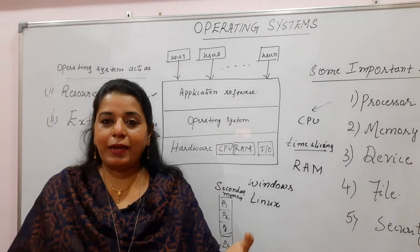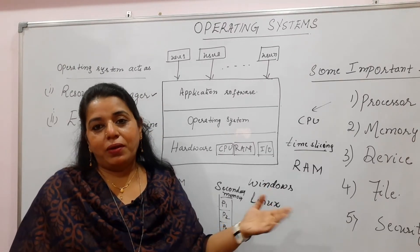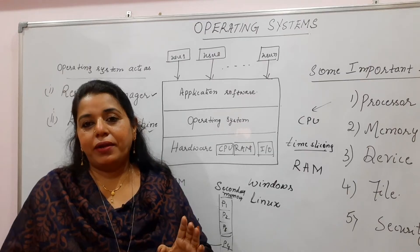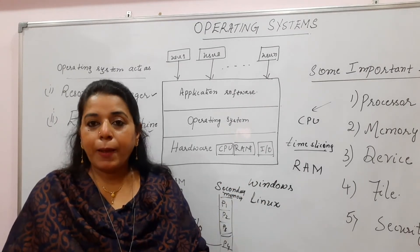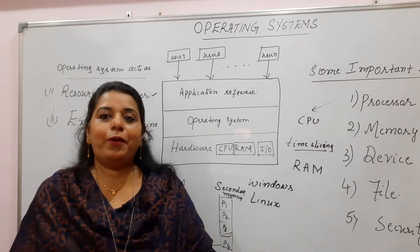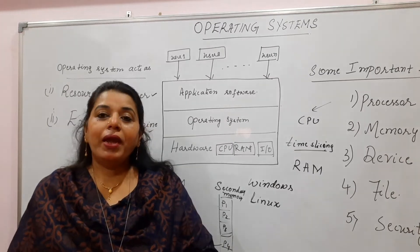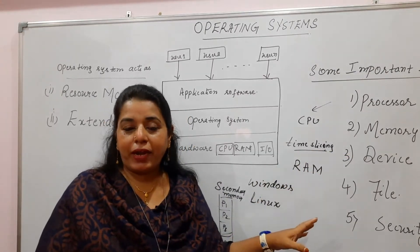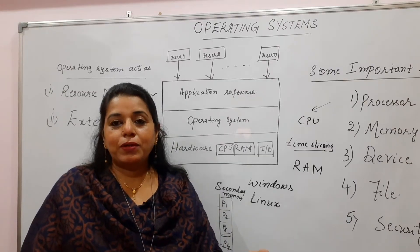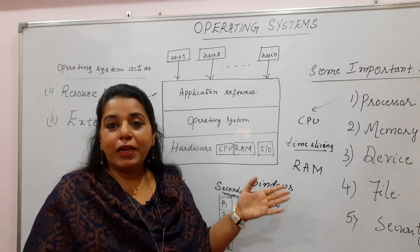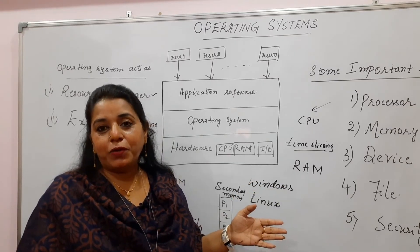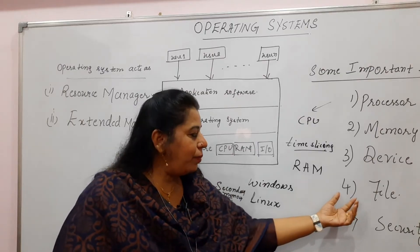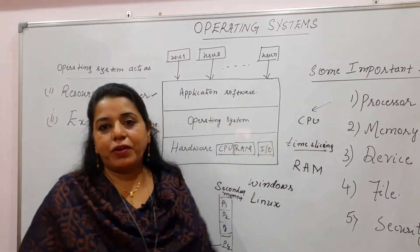Similar is the case with device management. If there is one single printer connected to a system and multiple users are trying to print, it is the job of the operating system to allocate the device. Whether it is a printer, scanner, or any other device, it will be allocated then deallocated. Whether it is a process getting allocated to the processor or memory being allocated to a process, the same applies to devices. Then there is file management — files are stored in directories and the operating system takes care of the directory structure, file information, file size, and permissions. File management is also an important function of the operating system.